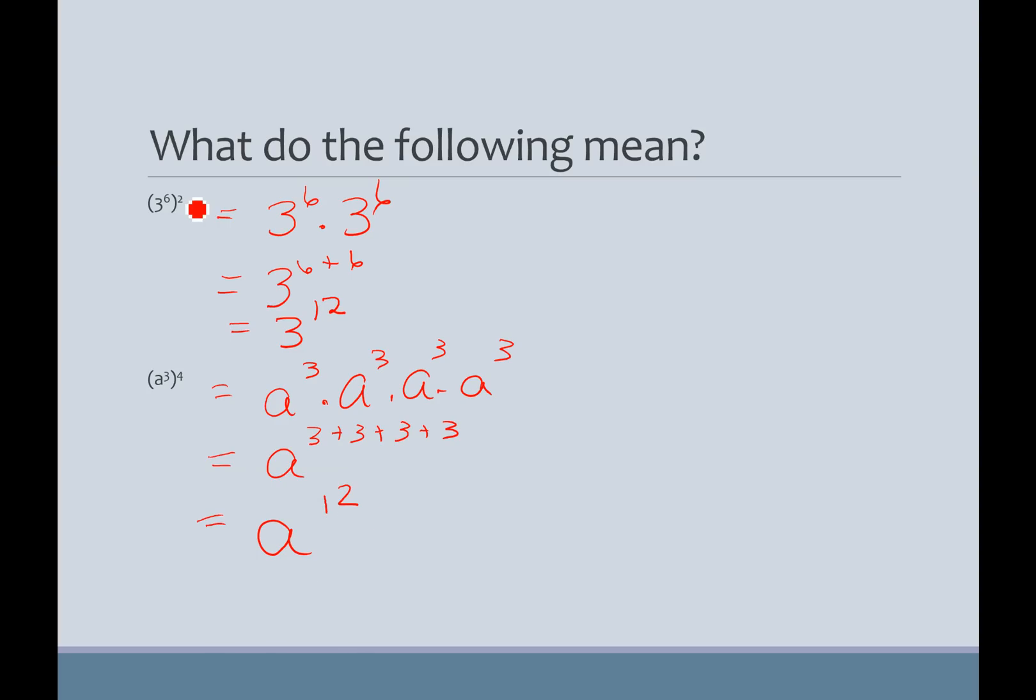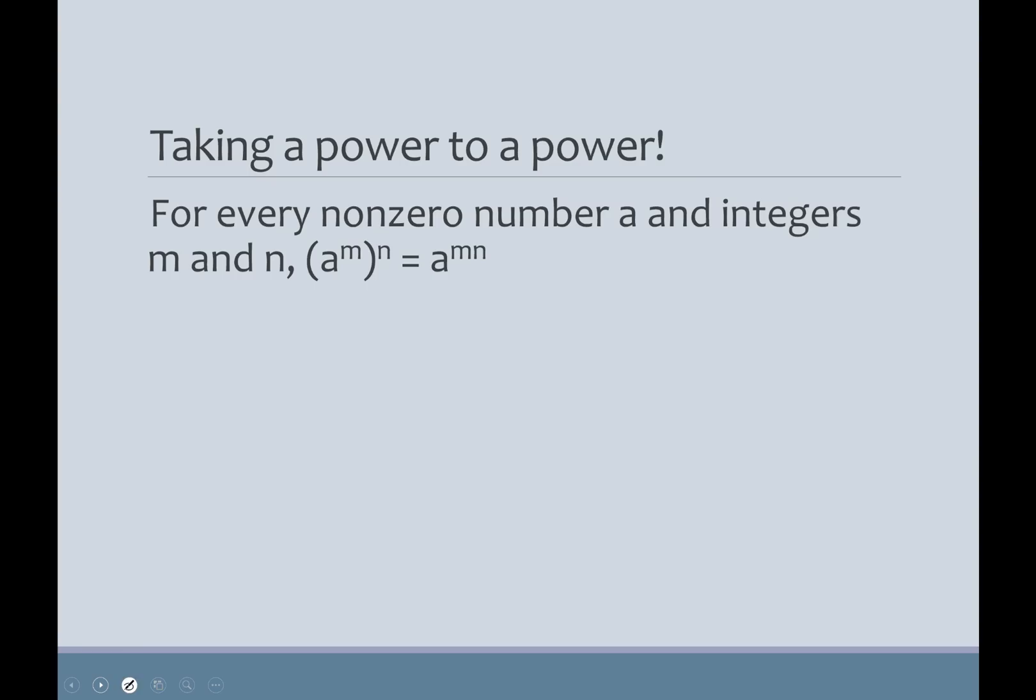I want you to notice. 6 times 2 is 12. 3 times 4 is 12. Now, they're not always going to equal 12, but they are going to multiply or equal what you multiply.